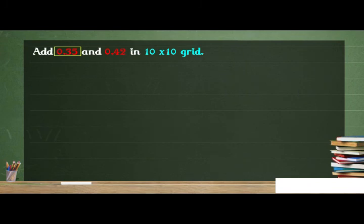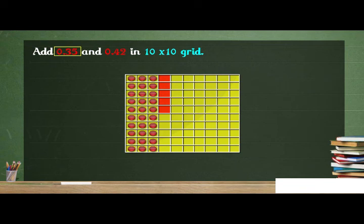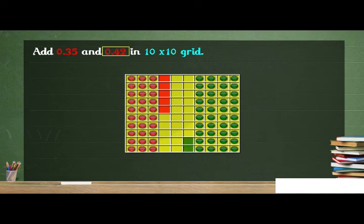We will add 0.35 and 0.42. Let us see this expression in a 10×10 grid. Mark 0.35 in this square by shading 3 tenths and colouring 5 hundredths. Mark 0.42 in this square by shading 4 tenths and colouring 2 hundredths.